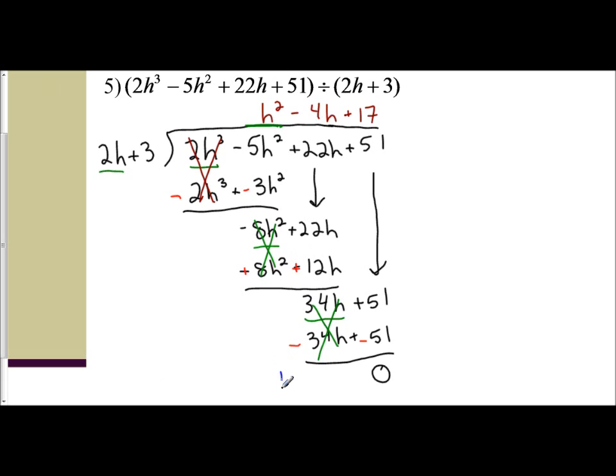So I do not need to take it into consideration when writing my final answer. So my final answer is just what I had on the top: it is h squared minus 4h plus 17.